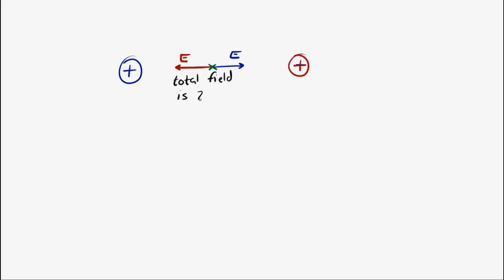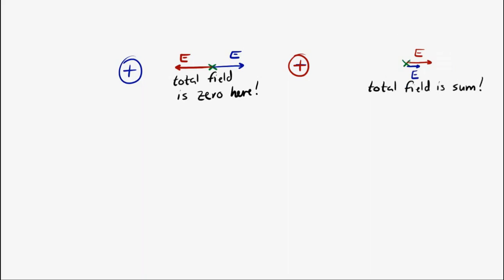I have to add them up as vectors, which means I have to pay attention to their directions. If I go over to the other side of the red one, there will be a strong electric field from the red one and a weaker electric field from the blue one, because the blue one's farther away. The total field at that location is the sum of those two fields. We can even go off that line — down here — and the electric field at that location is the sum of the field from the red charge and the field from the blue charge.